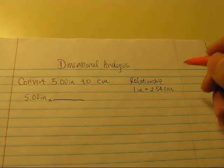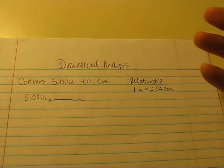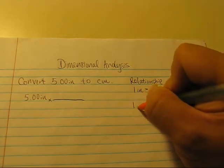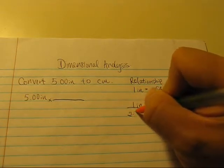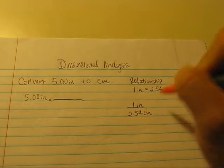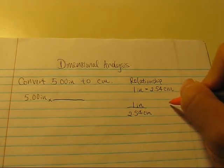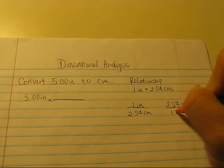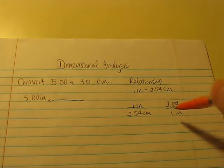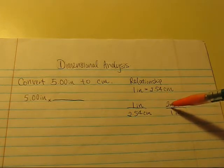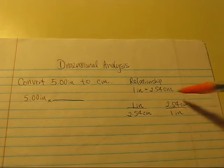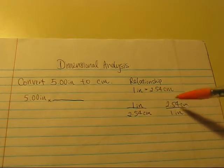And then, well, there are two possible conversion factors that we can make based on this relationship. It is either 1 inch over 2.54 centimeters or 2.54 centimeters over 1 inch. Now, before we determine which one to put in here, let's look at what are these two conversion factors.